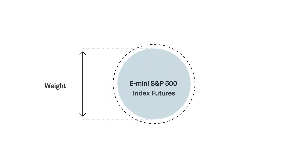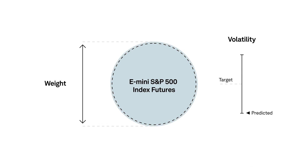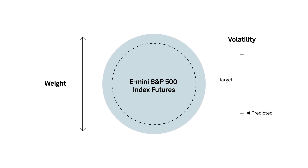Combined together, these measures of volatility create an enhanced model intended to help forecast future market movements. When the volatility forecast is below the target, exposure to E-mini S&P 500 index futures within the index increases, up to a leveraged position that can vary based on the volatility target.